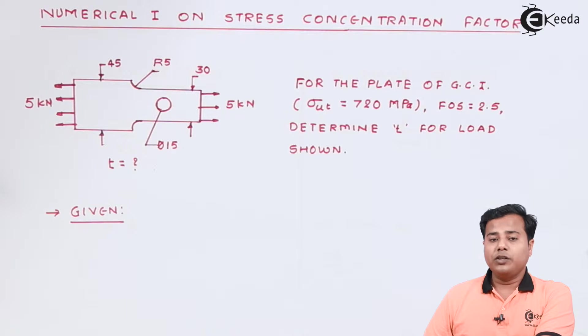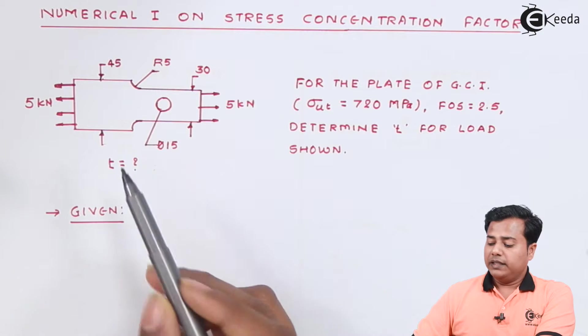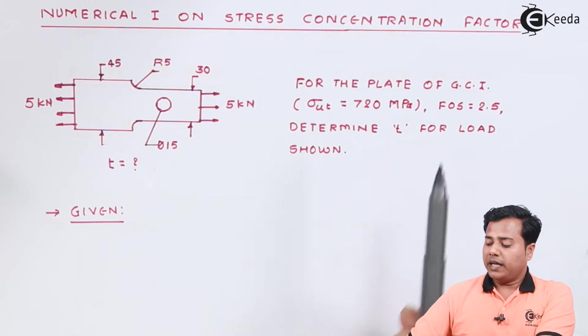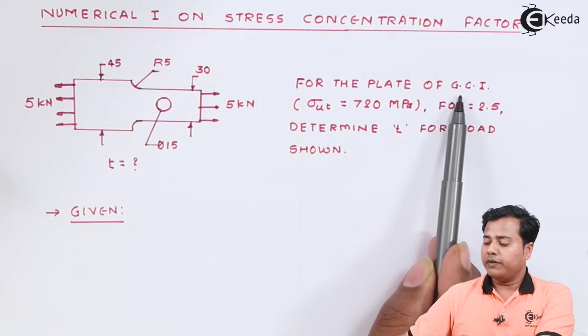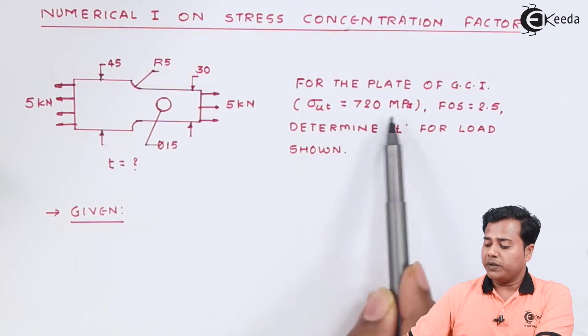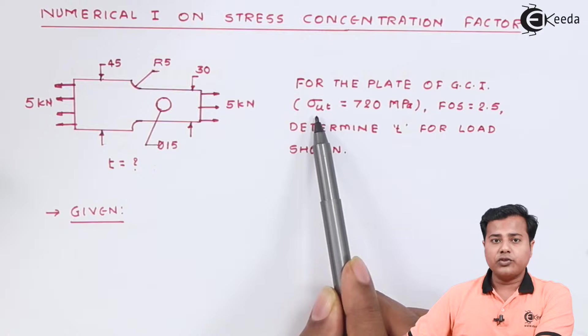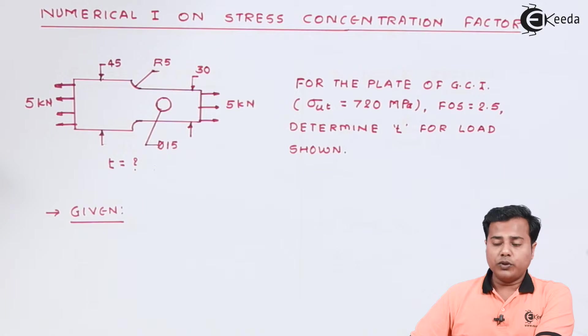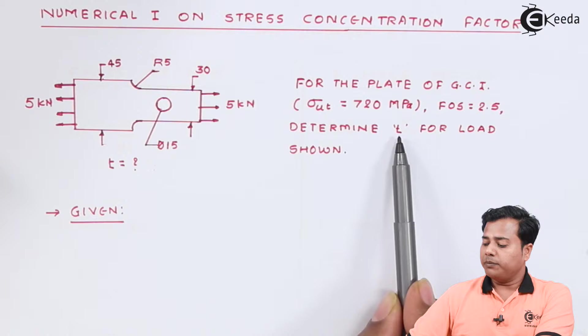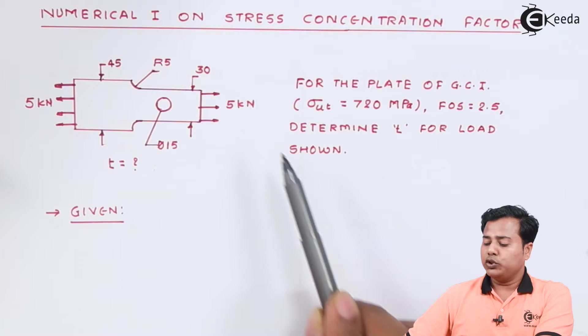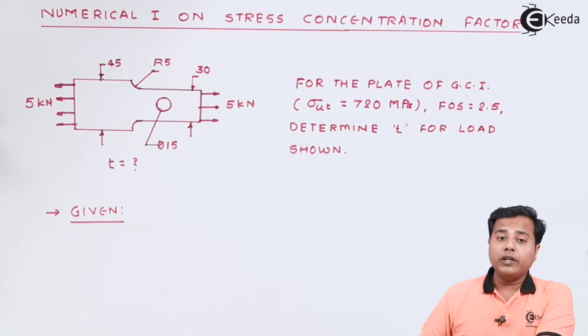Students, you can see the numerical statement and the problem statement on the screen. They have given us a plate and it says that for the given plate of grey cast iron with its material property given, it is the ultimate stress value with factor of 52.5. We need to determine the thickness for the load shown so that it will not fail in fluctuating loads.